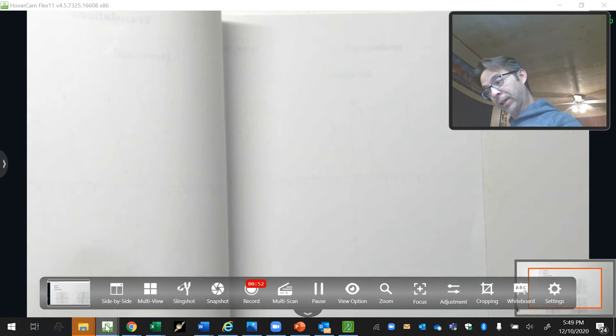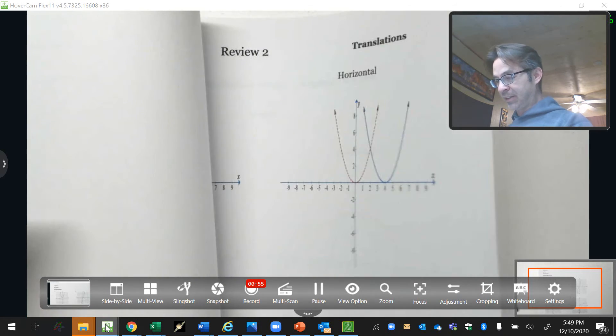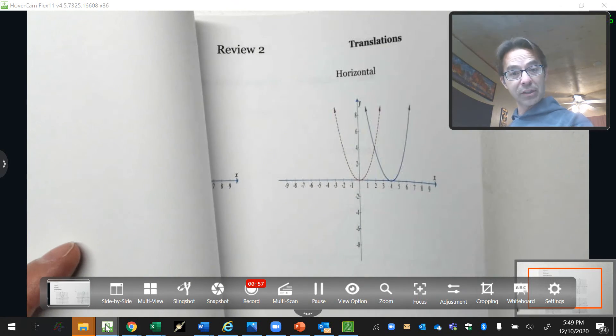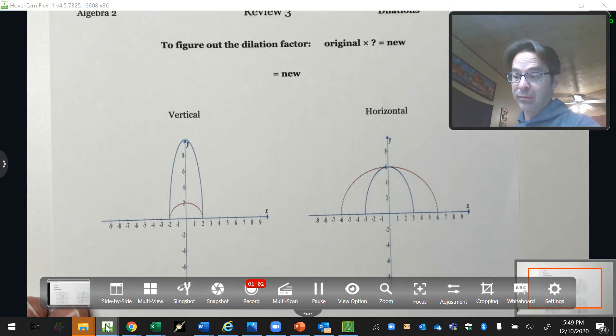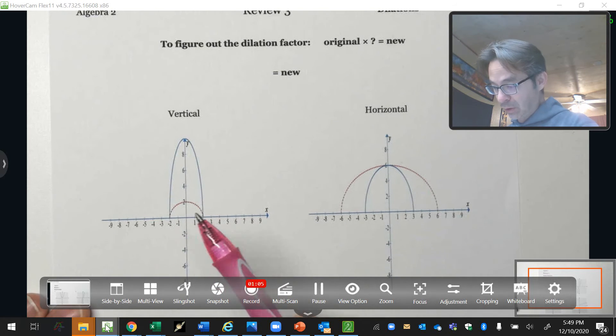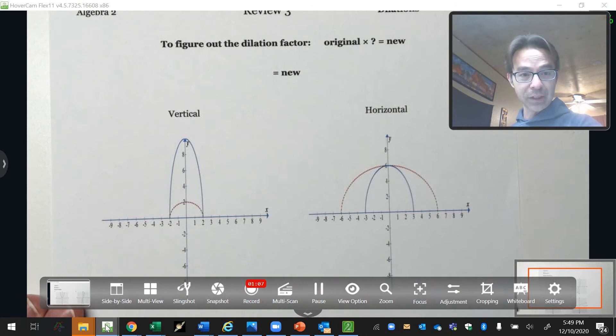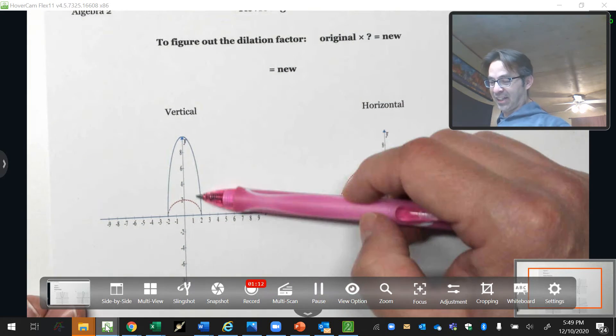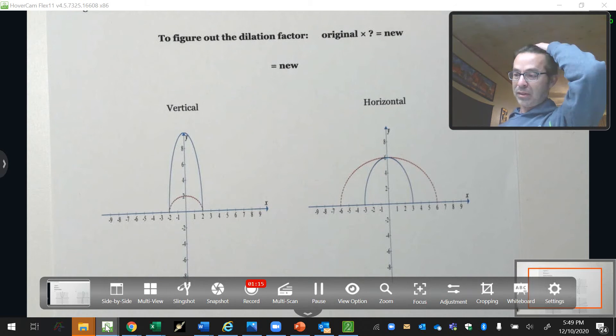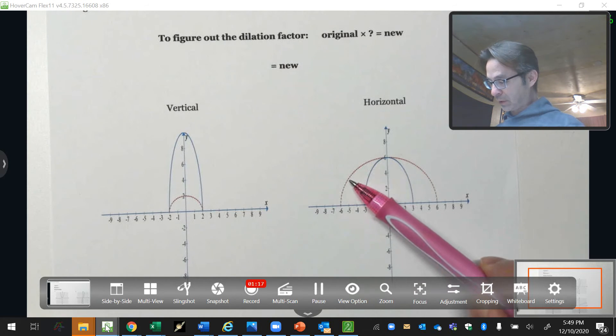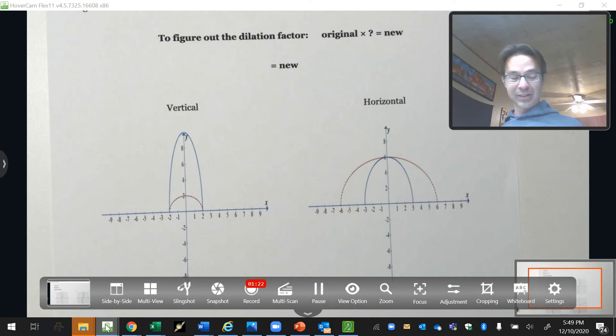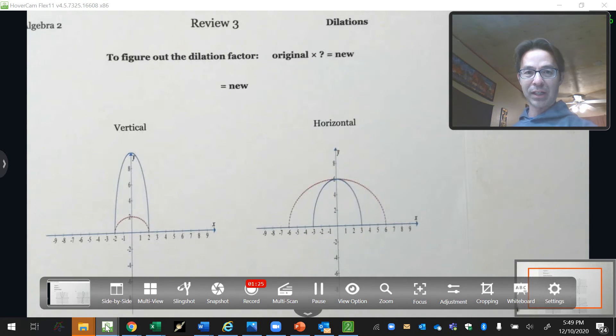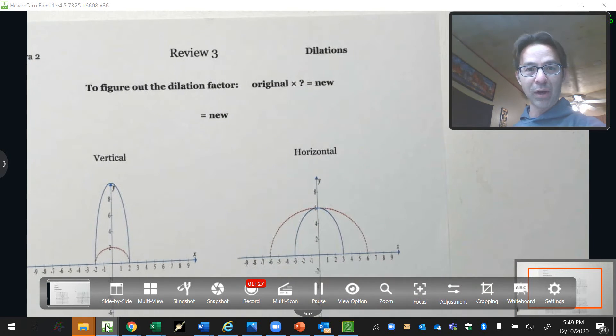Dilation, on the other hand, the original function and the new function look nothing alike. The original function is a semicircle. The new function is not a semicircle, not even close. It's like half of an oval. The original function is a semicircle. The new function is not a semicircle. So that's how you can tell a dilation apart from a translation.